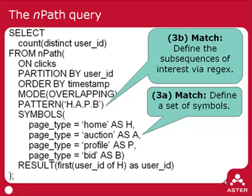NPath acts like a table, so we can then arbitrarily dissect or manipulate it with SQL. In this case, we're interested in the count of distinct users that follow this particular path. NPath produces a table with one row for each time the path occurs, we do a count distinct over all user IDs, and we get the total number of distinct users who follow this path through the site.